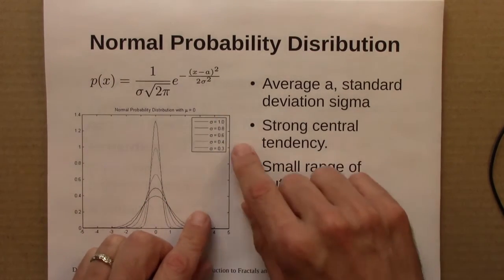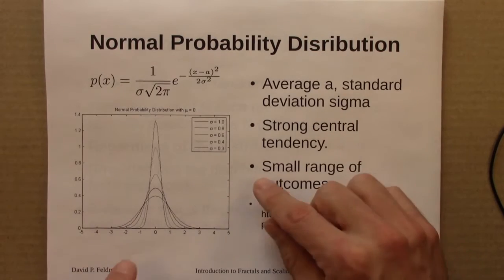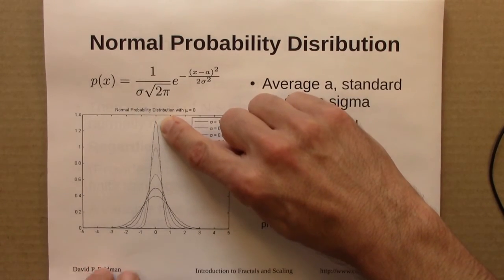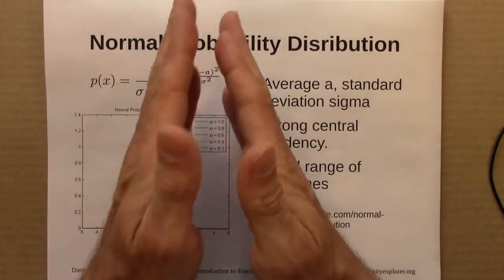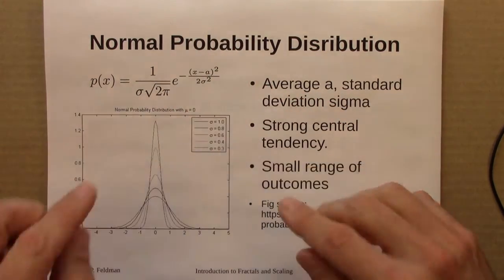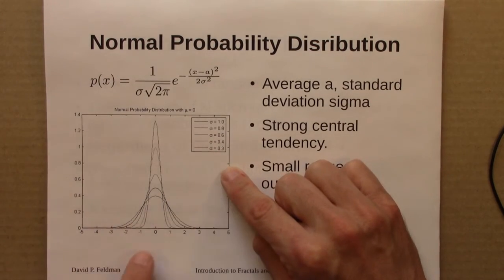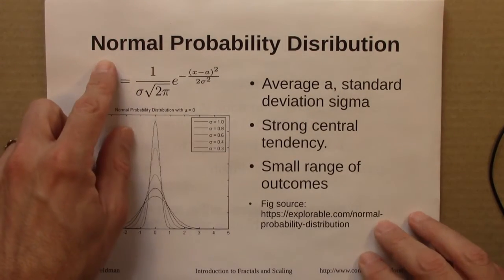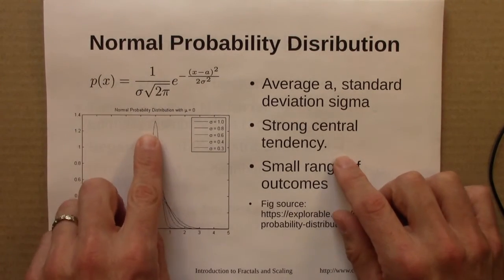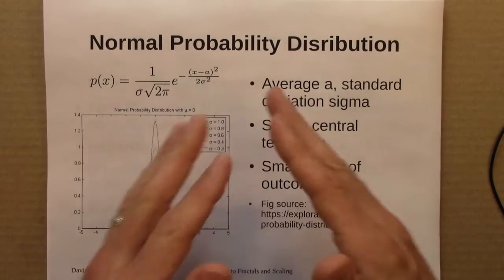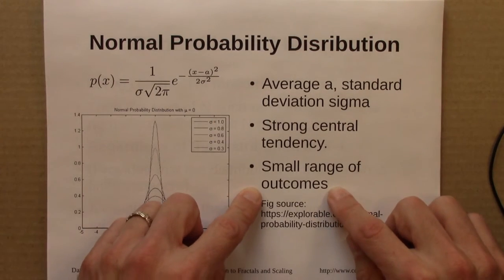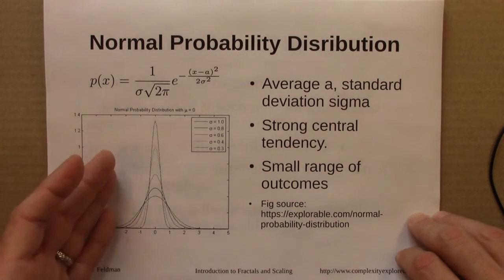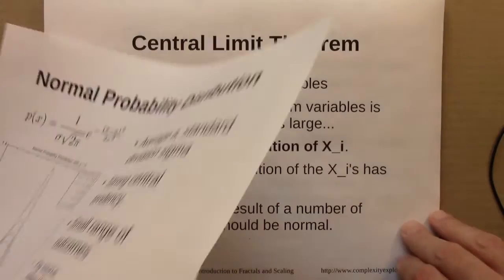So the standard deviation is a measure of how spread out it is. And so this one, which is very peaked and narrow, has a small standard deviation, and this shape widens out as sigma, the standard deviation, gets larger. So the normal distribution, it has a very strong central tendency, they're clustered, and there tends to be a relatively small range of outcomes that we see, compared, say, to the word frequencies that go from 1 to 14,000.